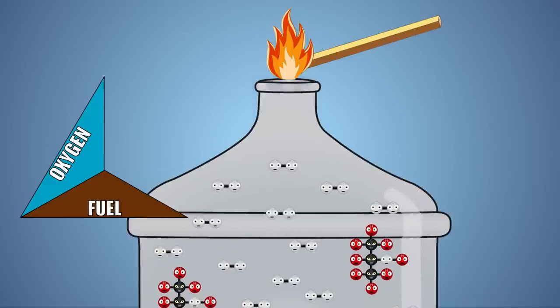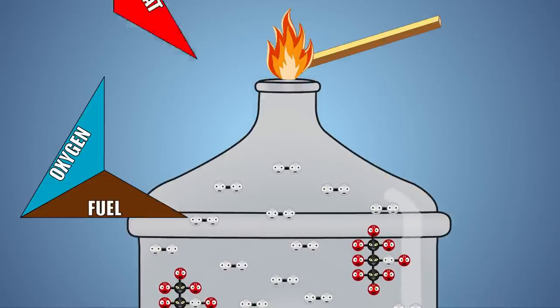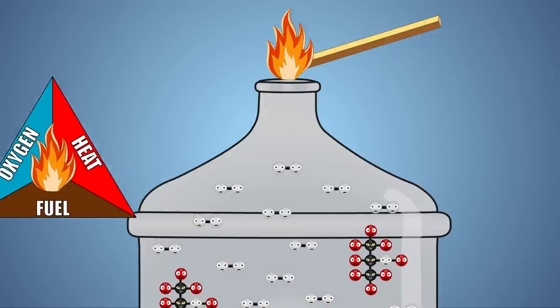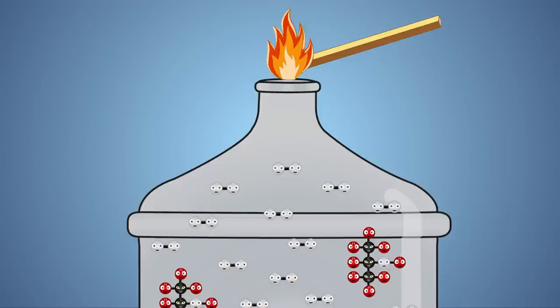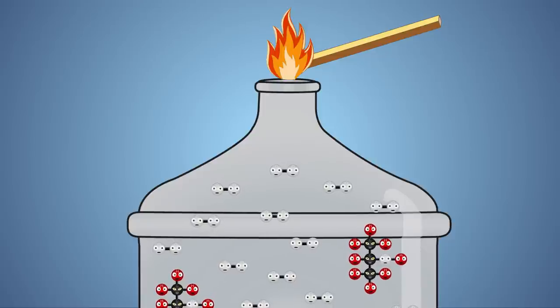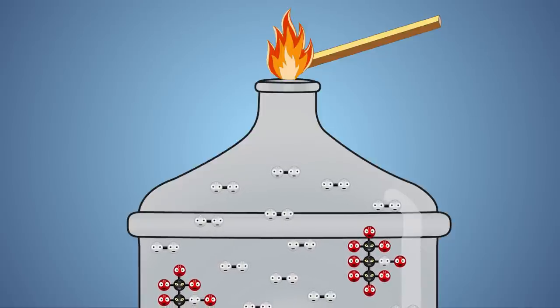When we introduce heat in the form of the flame from our butane lighter, we are adding the third ingredient to our combustion triangle. Because the alcohol fuel is in a gaseous state and is mixed with lots of oxygen molecules, combustion will occur very rapidly.